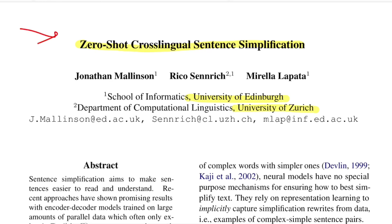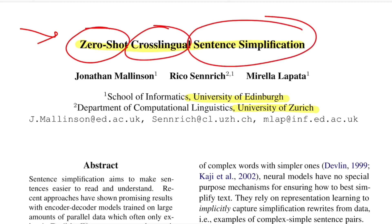There are a couple of keywords in the title: zero-shot, cross-lingual, and sentence simplification, that we need to understand first before delving into the paper. Sentence simplification is, as the name suggests, trying to simplify a sentence so it is easier to read compared to its previous version.